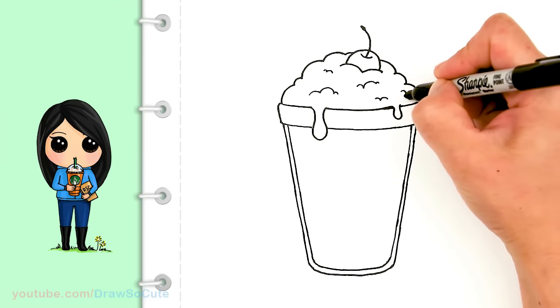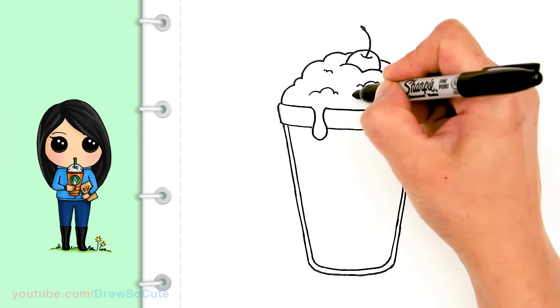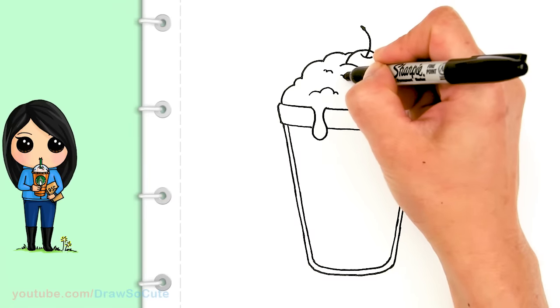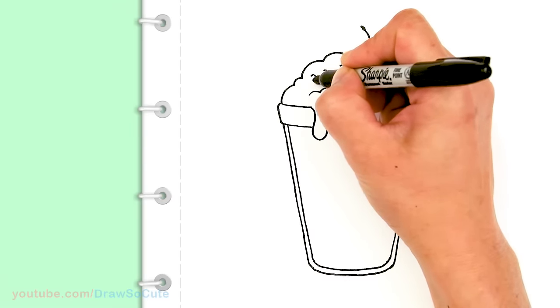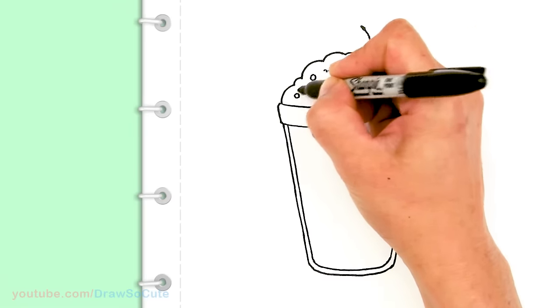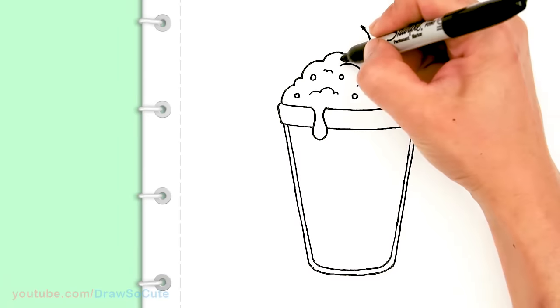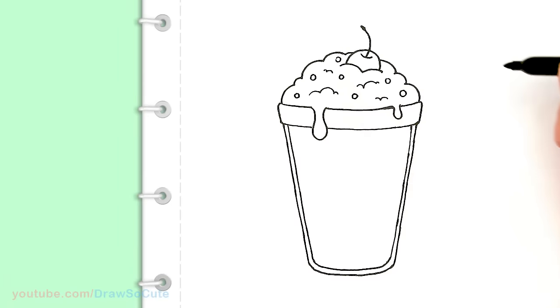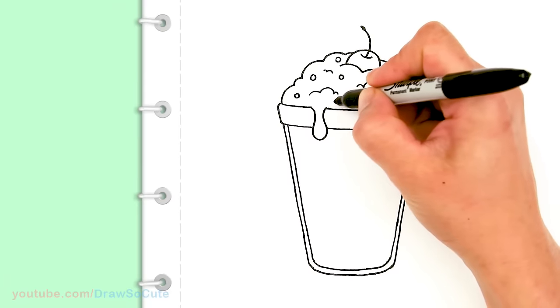And if you want you can add some circles here and there for some sprinkles. You can never have too many sprinkles on anything right? So here and there. I'm going to add a circle. Maybe one more here.